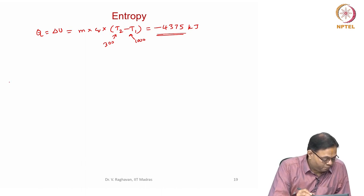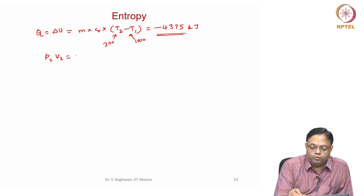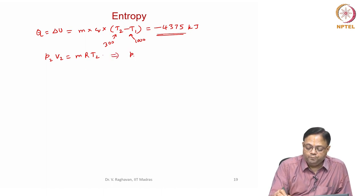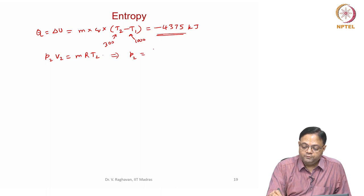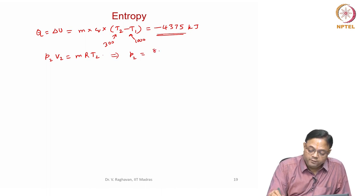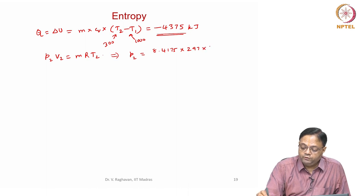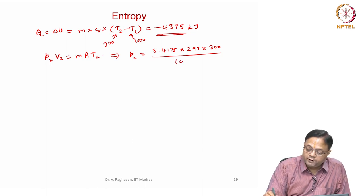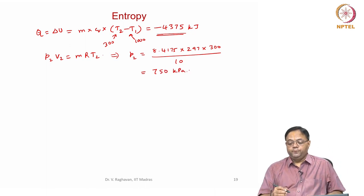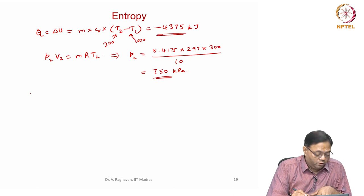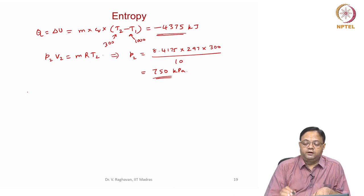Next, for the final pressure: P2·V2 = m·R·T2. So P2 equals m·R·T2 / V2 = 8.4175 × 297 × 300 divided by 10, which equals 750 kPa. The final pressure is 750 kPa, and the heat interaction has been obtained.